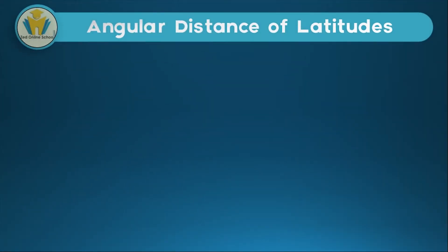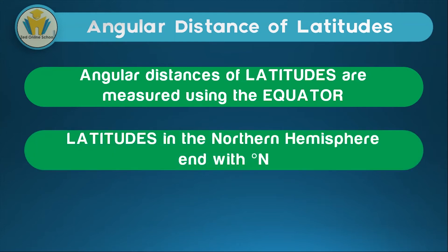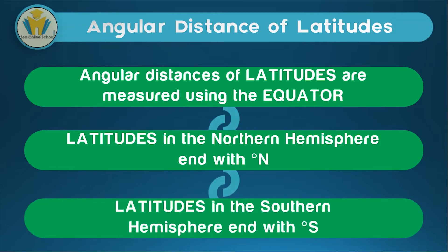There are three points you should note when handling questions involving angular distances. One is that angular distances of latitudes are measured using the equator — you don't use any other line as your baseline. As you saw in the 2D representation, our equator was the line where we had our base, then a line was drawn from the center of the earth to the latitude whose angular distance we wanted to measure. You should also note that latitudes in the northern hemisphere end with degrees north while latitudes in the southern hemisphere end with degrees south. That's basically how we find angular distances of latitudes.